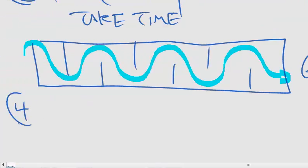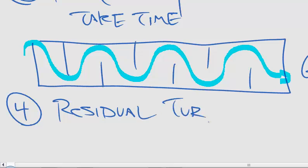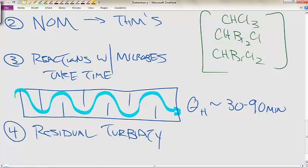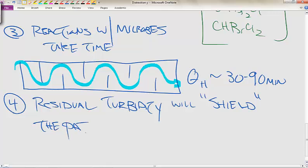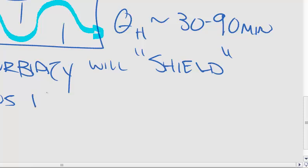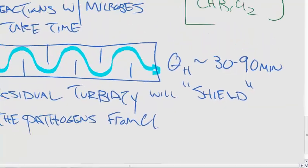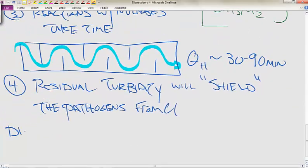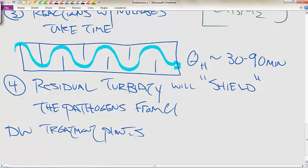Number four here is the residual turbidity. Residual turbidity that you have in the water will or may shield the pathogens from chlorine. If you have some dirty water, the chlorine might not see or react with those pathogens that you have there, and it's not going to be as effective. So you must really have clean water to disinfect.